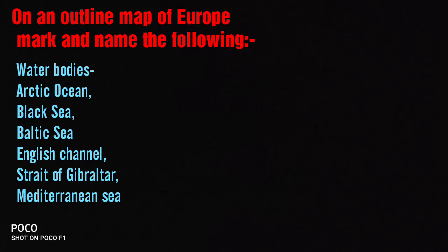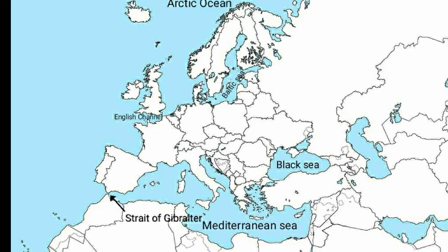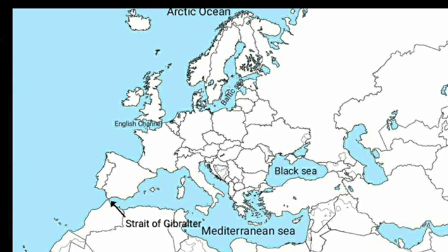First, on an outline map of Europe, mark and name the following water bodies. For water bodies, we will be using blue pencil colour. This map shows the water bodies associated with Europe.